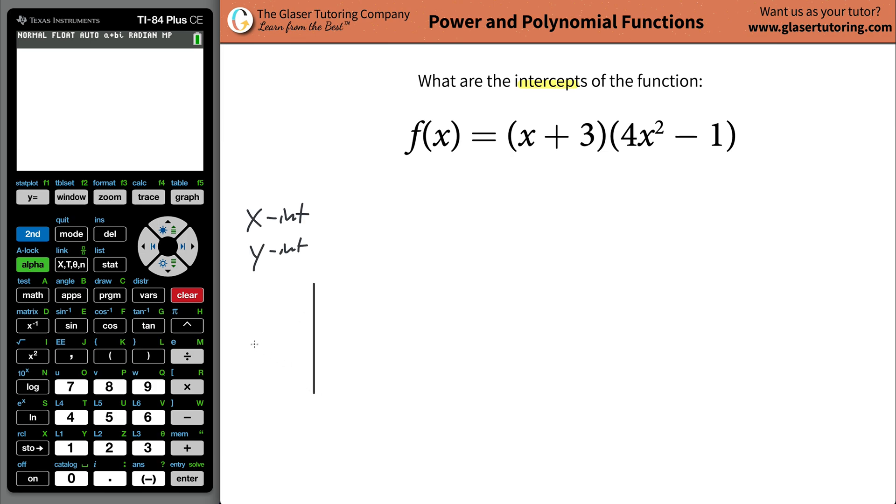If we look at a graph and pretend the function looks like this—I have no idea if this is what it actually looks like, but just pretend this is the function we're dealing with. The x-intercepts are going to be the values of x, or we can think about them as coordinates, where the function intersects the x-axis.